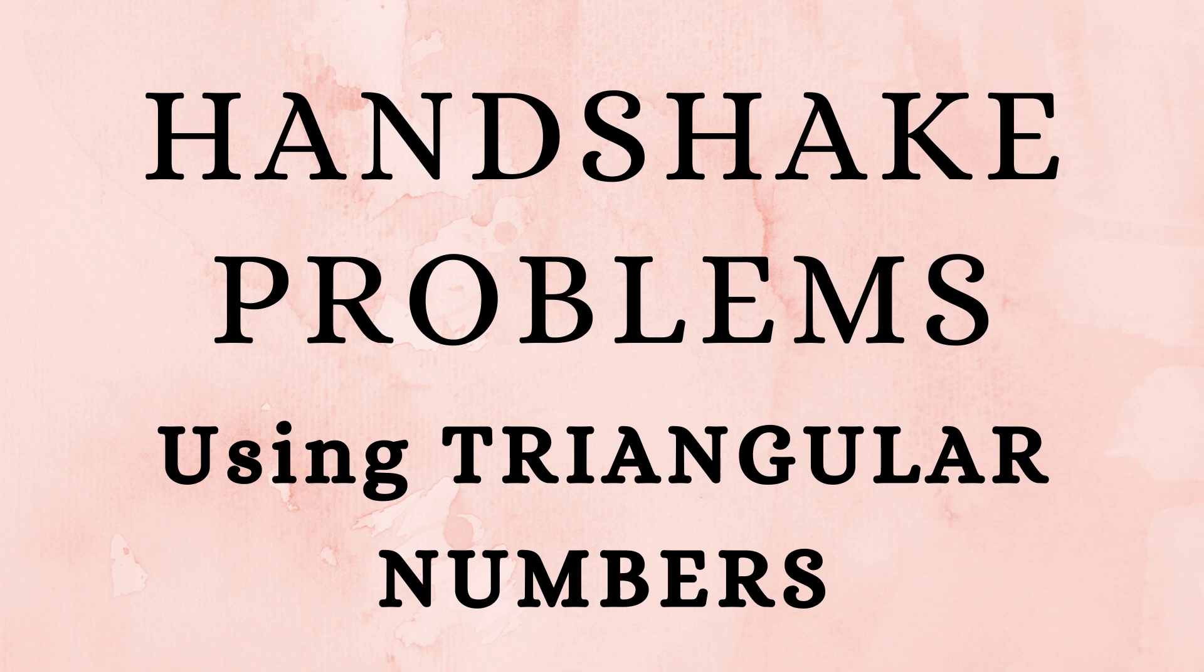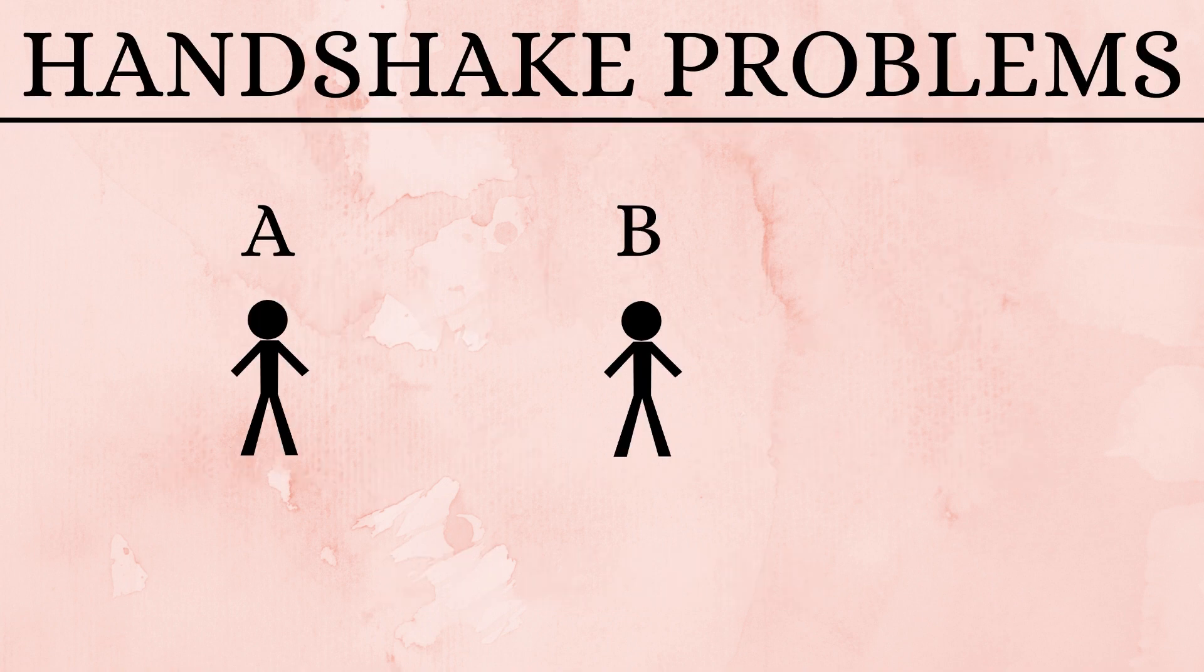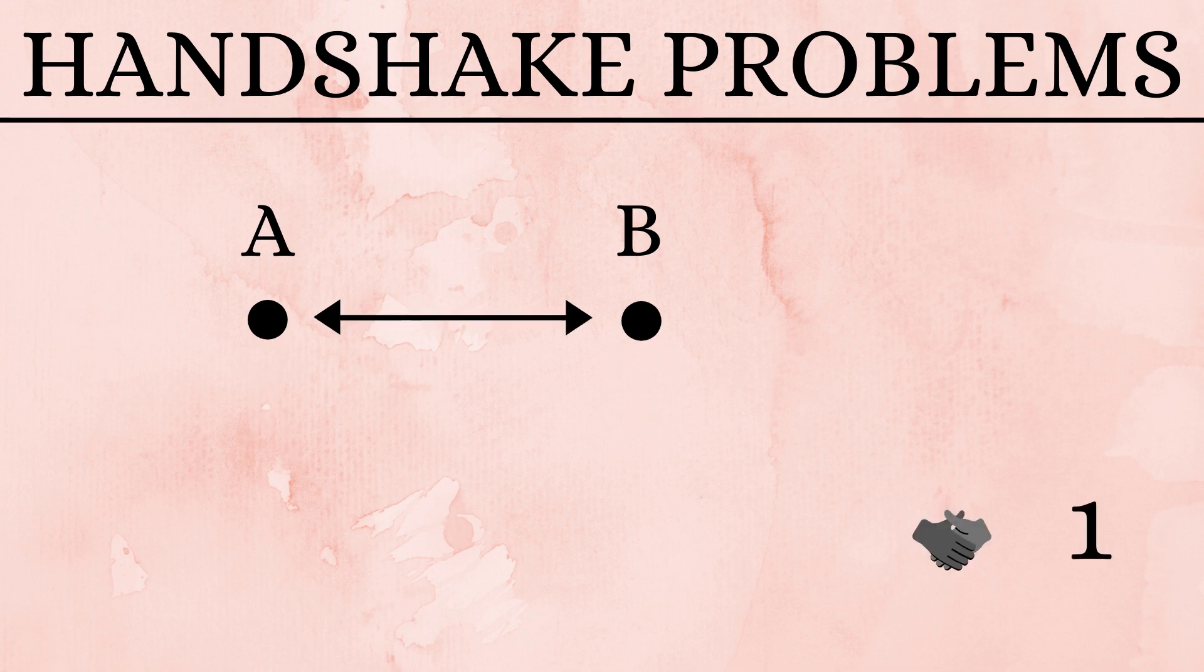Handshake problems using triangular numbers. Let us consider there are two people A and B. The number of handshakes that can be done is 1.